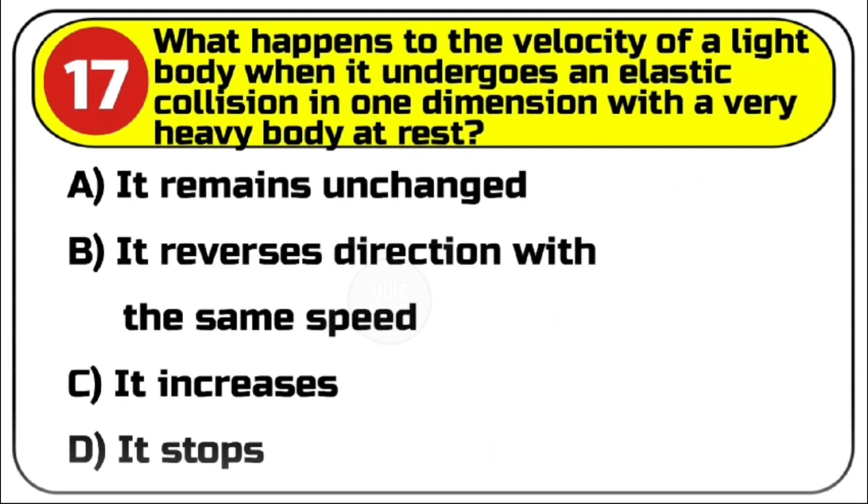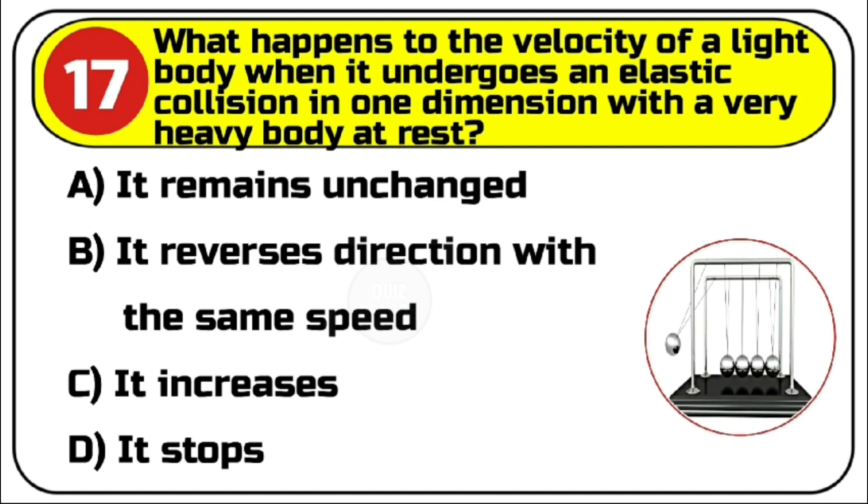Question number 17. What happens to the velocity of a light body when it undergoes an elastic collision in one dimension with a very heavy body at rest? Options are A. It remains unchanged. B. It reverses direction with the same speed. C. It increases. D. It stops.